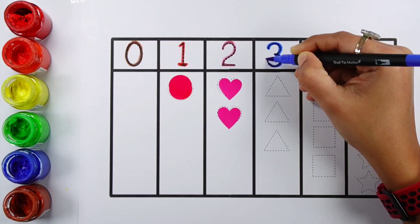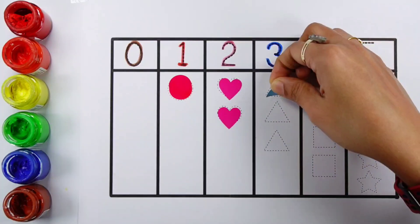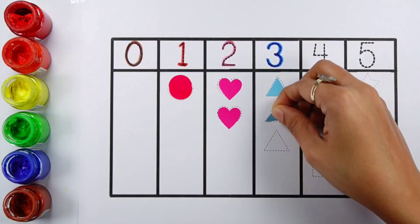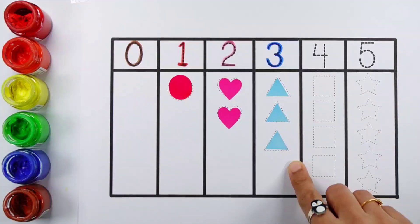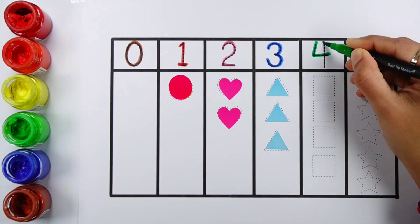Number three. One, two, three. Three triangles. Number four.